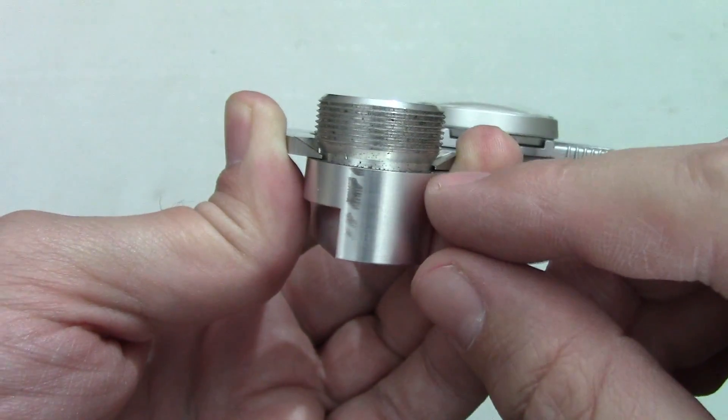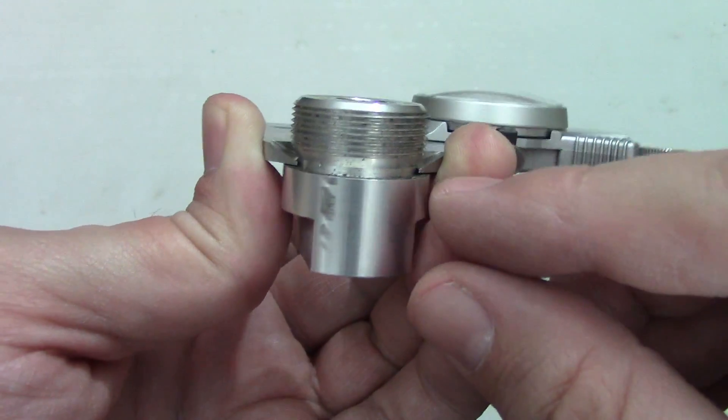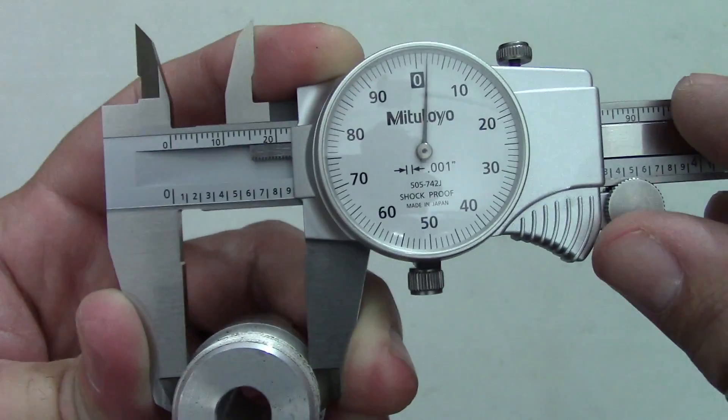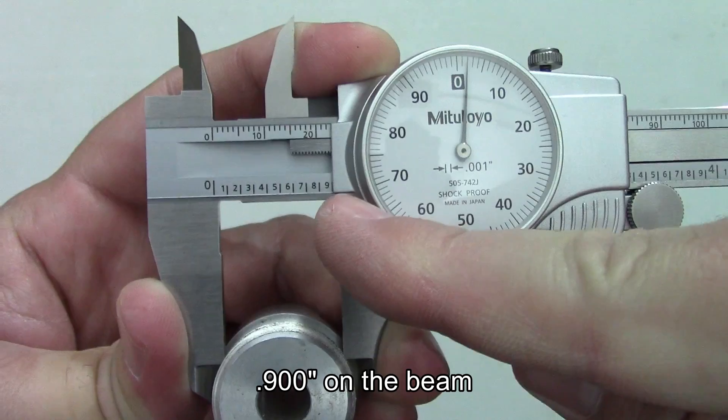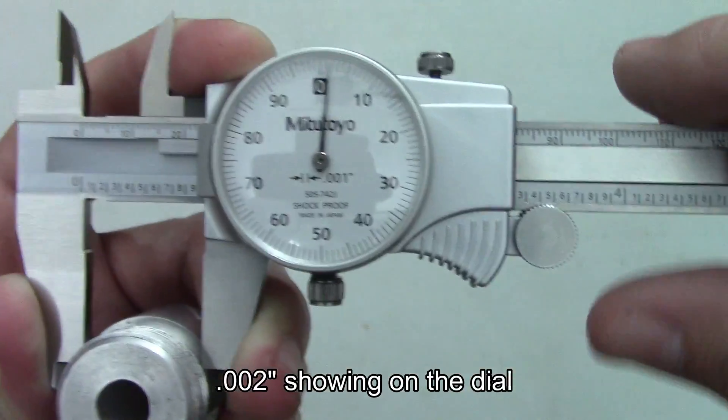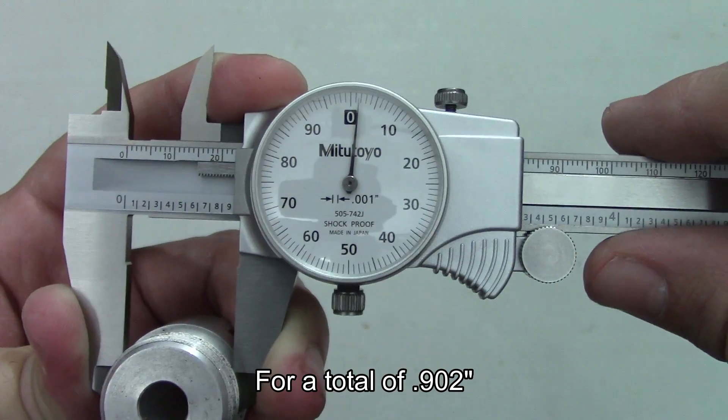If we wanted to check the diameter at the bottom of this thread relief, we can squeeze that in with the tapered ends of the jaws. And we are showing nine hundred thousandths on the beam and another two thousandths on the dial for a total of nine hundred two thousandths of an inch.